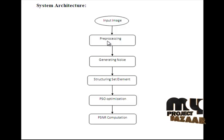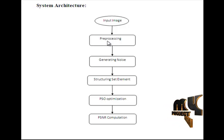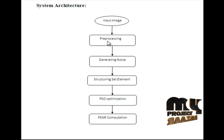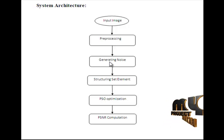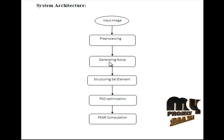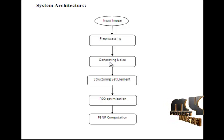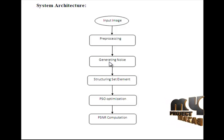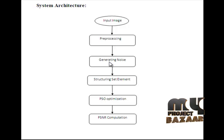When we rescale the image, rescaling is the process of resizing the image. After the pre-processing stage, it is passed to the noise generation module. In this module, we generate noise to the image for denoising. Here, we generate Gaussian noise to the image. Gaussian noise is a statistical noise that has its probability density function equal to that of the normal distribution, which is also known as the Gaussian distribution.